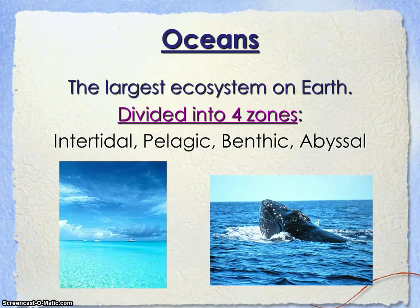Our oceans can be broken down into four major zones or categories: the intertidal zone, pelagic, benthic, and the abyssal zone. These move from close to the shoreline further down into the lowest depths of the ocean.